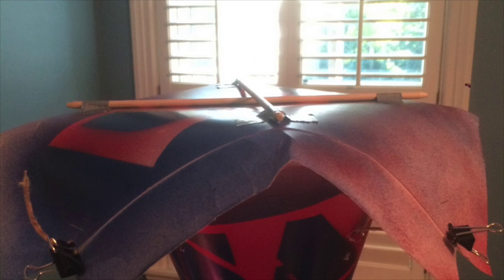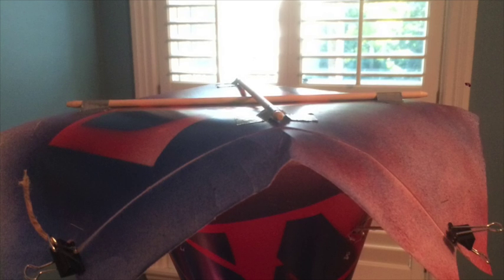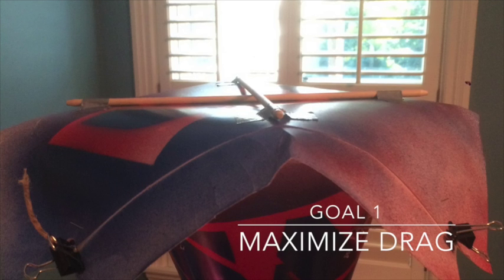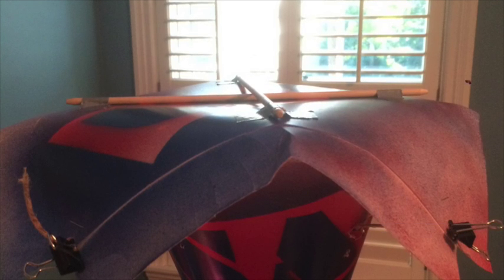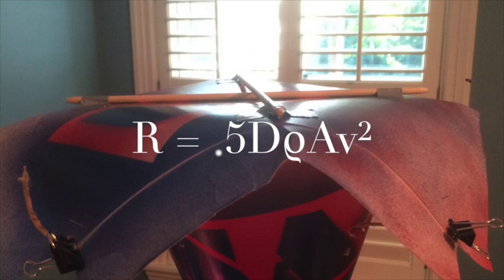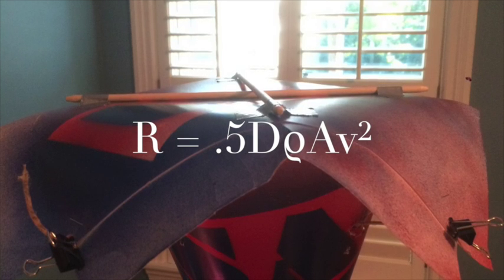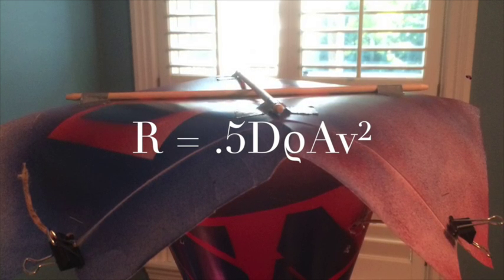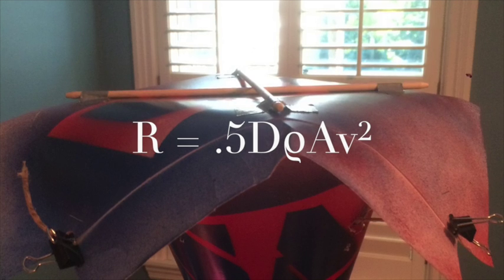To maximize drag, we constructed a parachute that expanded to the maximum dimensions allowed by the guidelines. Doing this maximized cross-sectional area and according to the equation of resistive force, this would then increase the upward directed drag force upon the structure.